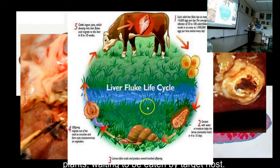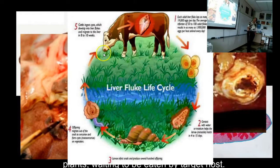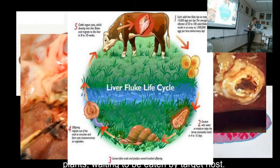If the snail is eaten with the grass, good for the worm. Otherwise, when it's done with its larval cycle, it will crawl out of the snail and wait on the top of a blade of grass for a cow, sheep, or pig to take a bite of grass and also eat the larva. Then it'll find its way into the liver and complete the life cycle.